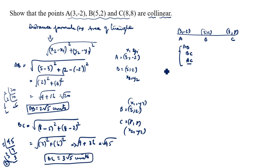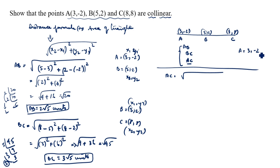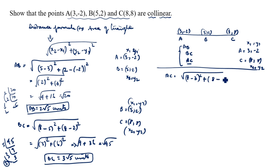Next we find AC. A is (3, -2), so x1 = 3, y1 = -2. C is (8, 8), so x2 = 8, y2 = 8. AC = √((8 - 3)² + (8 - (-2))²) = √(5² + 10²).